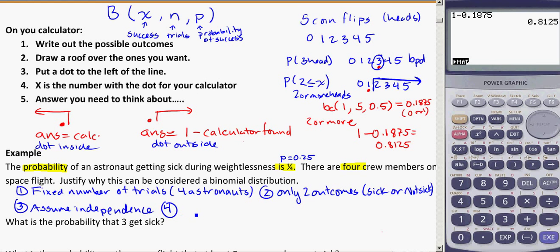And so number four, our final thing, is that the probability is constant for all trials. And that is, each astronaut has a one in four chance of being sick. So you do need to memorize those four criteria again. Fixed number of trials, only two outcomes, assume independence, and the probability is constant for all of them.